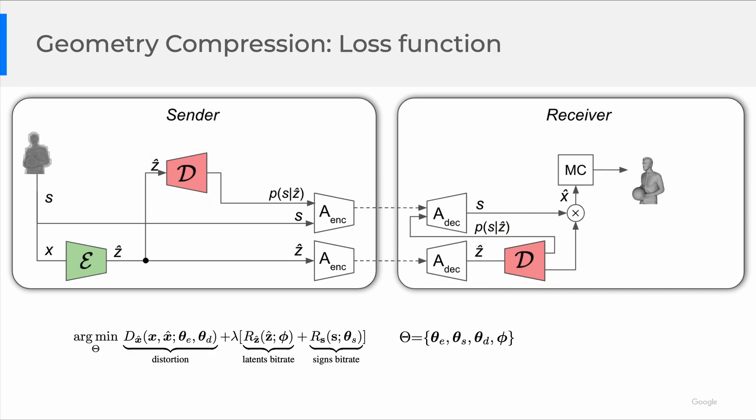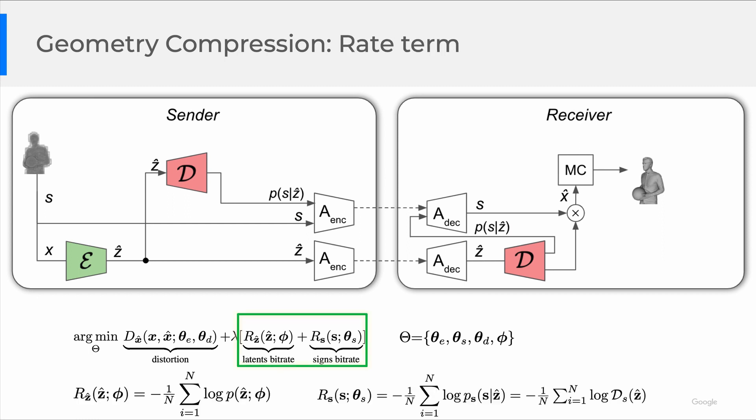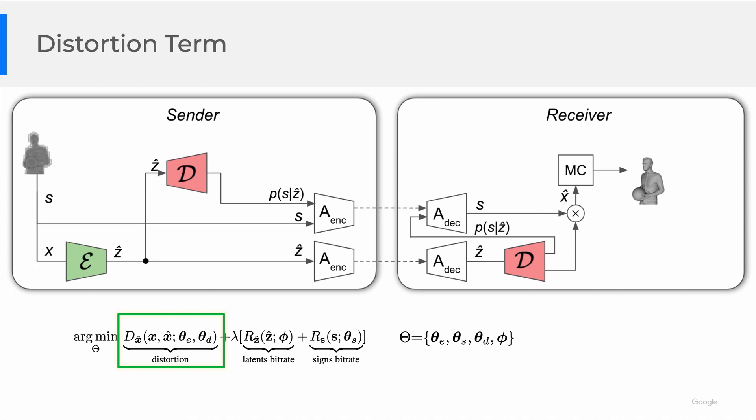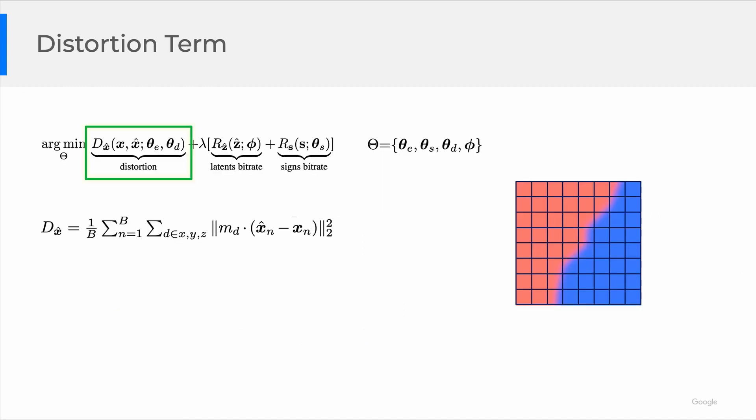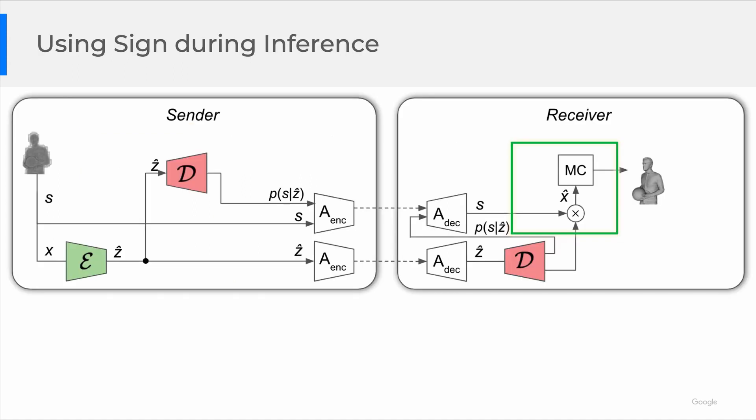Our loss function contains a distortion term and two rate terms for magnitudes and signs respectively. The distortion term measures the reconstruction quality. In particular, it measures the L2 difference of SDF values between ground truth and reconstruction. Since we only care about voxels near the surface, a focal loss on the occupied cells can be constructed with ground truth occupancy. Moreover, since the signs are losslessly compressed, on the receiver side we have the ground truth occupancy, which brings us an extra benefit to lower the reconstruction error.